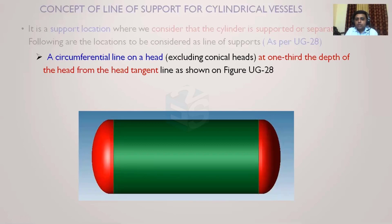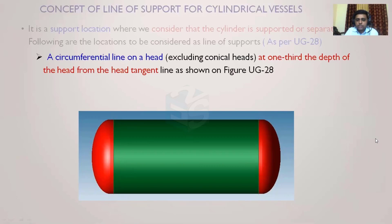Consider a horizontal vessel having a dish at each end — not just an open cylinder but one with dish ends. When this type of arrangement is present, we consider the line of support to be located within the dish part. When designing the shell for external pressure, we consider the effective length from one line of support to another, not just the shell length. The code defines this as a circumferential line on the head — excluding conical heads.